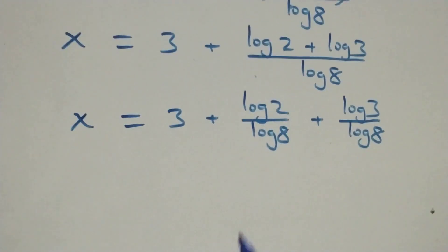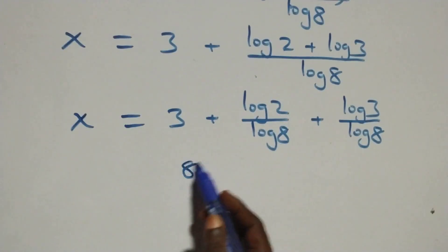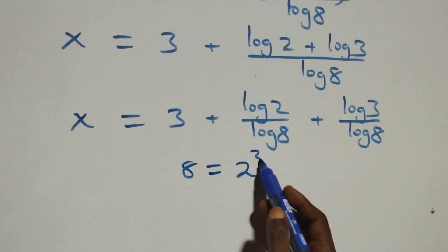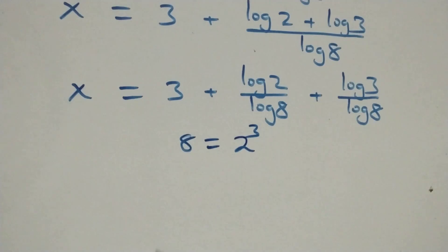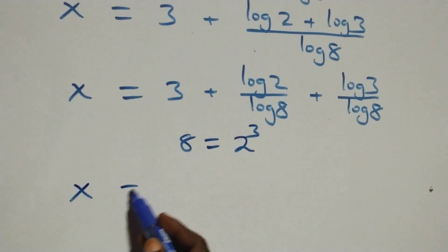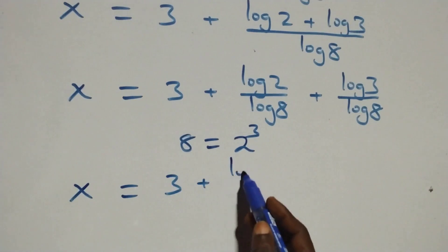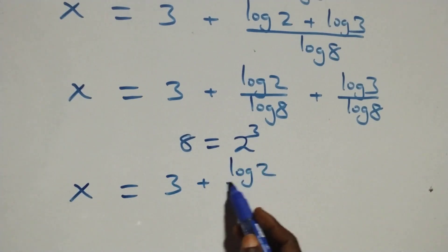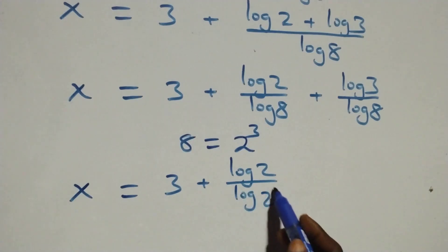We can write 8 as 2 times 2 times 2, which is 2 cubed. So x equals 3 plus log 3 over log of 2 cubed.